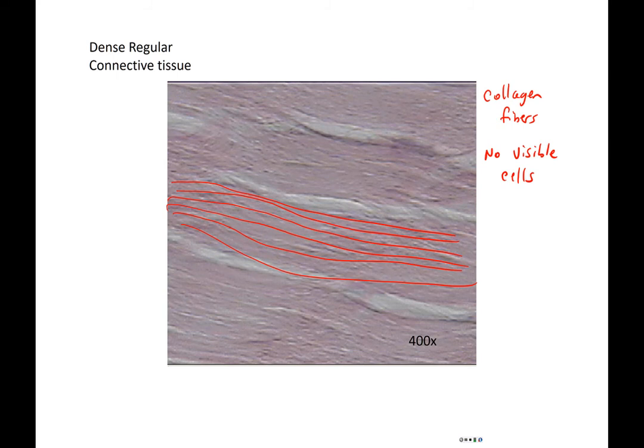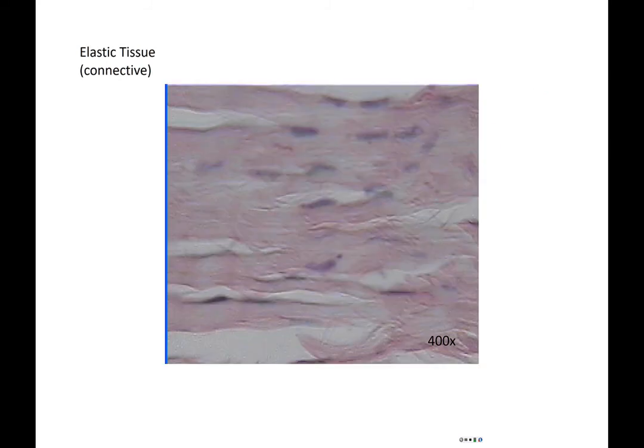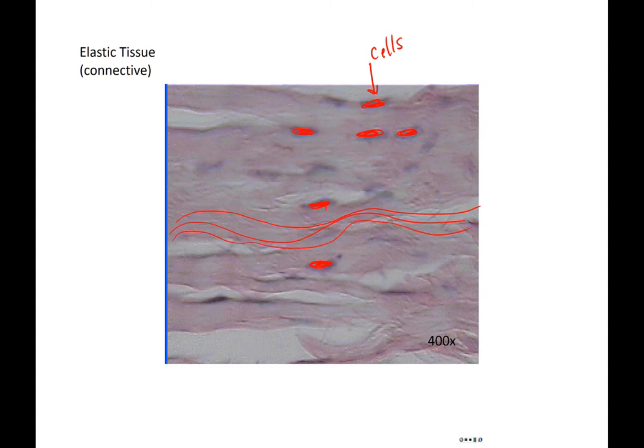Tendons and ligaments are also composed of the elastic tissue, and here you will see visible cells, so that's going to be a really good way to help differentiate between these two tissues. There's a little bit more of a curvature to these fibers as these are the elastic fibers, so they have a little bit of a stretchiness to them. I like to think about sort of a relaxed rubber band.